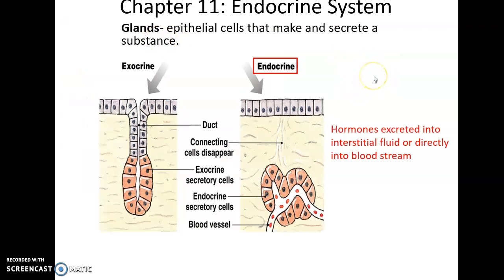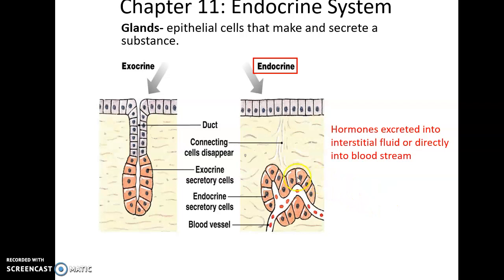Glands, as you may remember from unit one, are made up specifically of epithelial cells that make and secrete something. Exocrine glands have ducts and secrete substances onto a surface, such as saliva into the oral cavity or sweat onto the skin. Endocrine glands do not have a duct; instead, they secrete their hormones into the surrounding interstitial fluid or directly into the bloodstream.